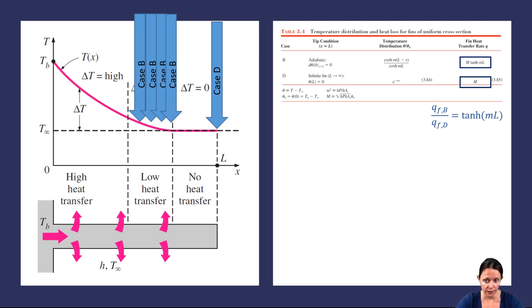So your book chooses a somewhat arbitrary value of 0.99. If the heat transfer for a fin of length L modeled as case B is 99% of what you would get with an infinitely long fin, this is the longest fin that you should have. Another way to think of it is if these conditions are met, using the equations for case D to model your fin is appropriate.